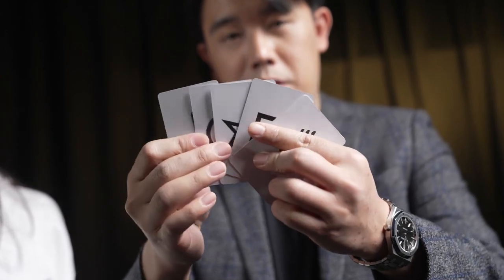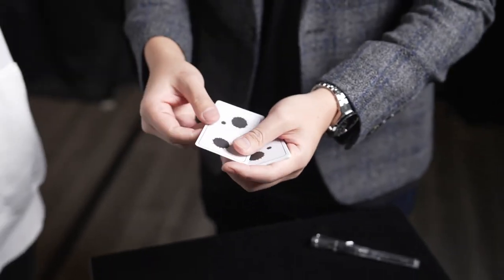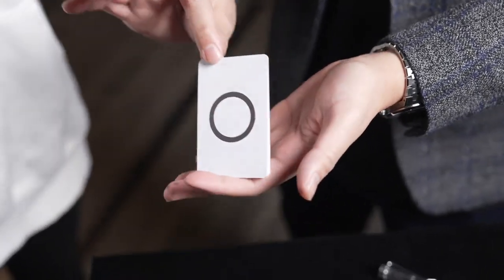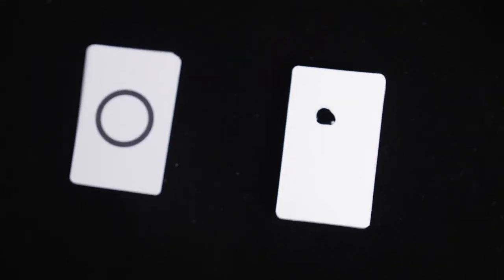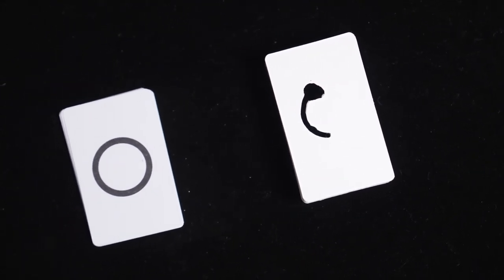You display a few ESP cards and have the spectator select one of them. Then you drop a few drops of ink on a piece of white card. On your command, the ink starts to move and form their selected ESP symbol.